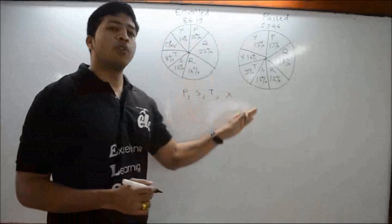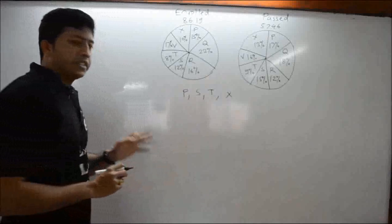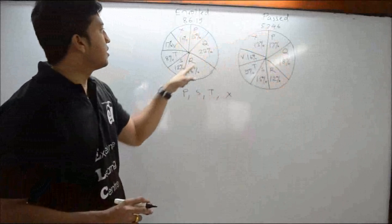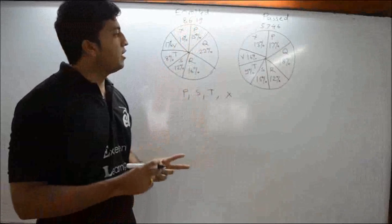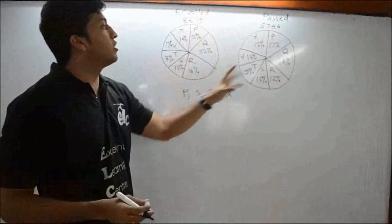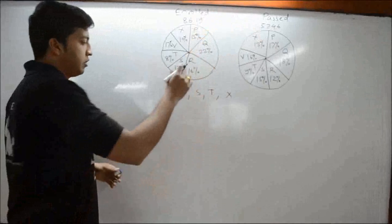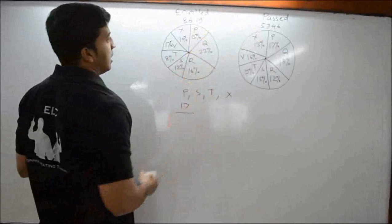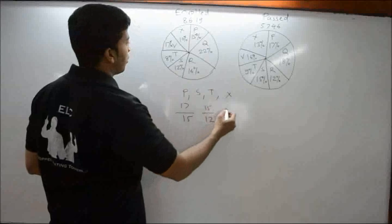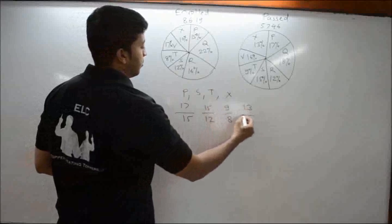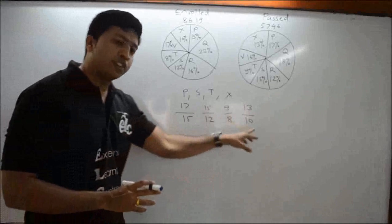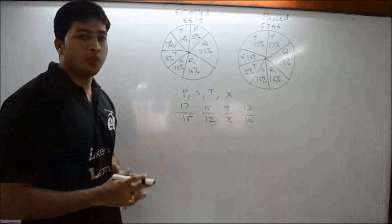We now compare only these four institutes. The key insight is that all these percentages are taken on the same base amount. So when comparing fractions where the first percentage and second percentage are each on the same total, we need not consider the absolute amounts — just the percentage values. For P: 17/15; for S: 15/12; for T: 9/8; for X: 13/10. We need to find which of these four fractions is the highest.